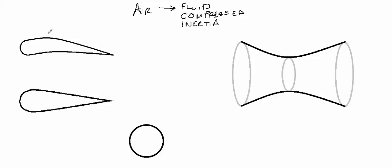Over here we've got an aerofoil, and there are a couple of things we need to highlight on it. I'm going to try and use consistent colours throughout. The first thing is all aerofoils have what's called a chord line. The chord line runs from the leading edge of the aerofoil — that point right at the front — to the point known as the trailing edge, which is the point right at the back. It doesn't actually follow the contour of the aerofoil; it is a reference line that literally goes from the leading edge to the trailing edge.